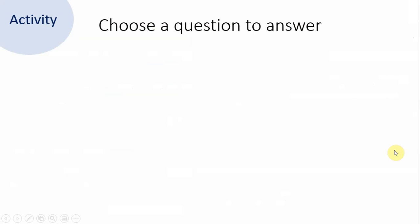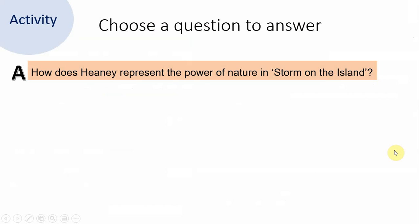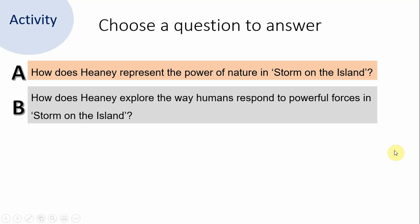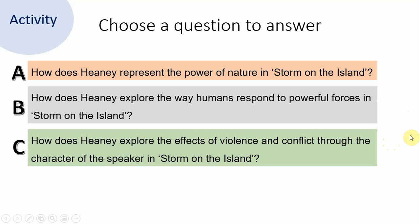Here is your assessment activity and you have a choice of questions. A: how does Heaney represent the power of nature in Storm on the Island? B: how does Heaney explore the way humans respond to powerful forces in Storm on the Island? — that is a little more in depth and requires you to look at a couple of different interpretations. C: how does Heaney explore the effects of violence and conflict through the character of the speaker in Storm on the Island? — this is more in depth and more precise; it requires you to talk about more details of the poem, so the challenge is higher, but it allows you to be more exploratory in what you write.